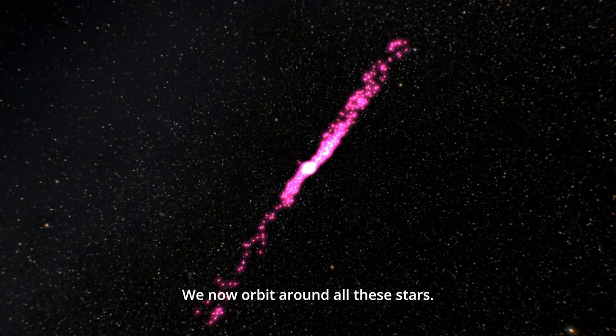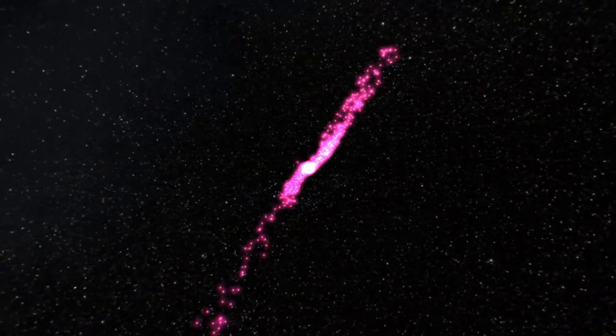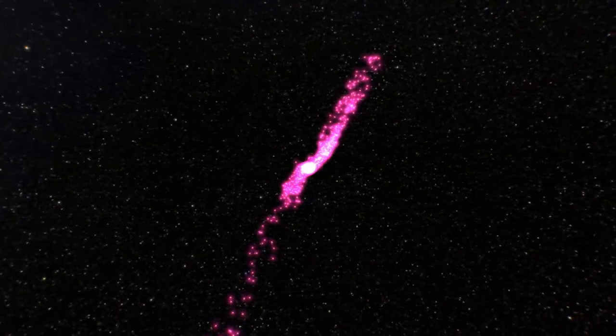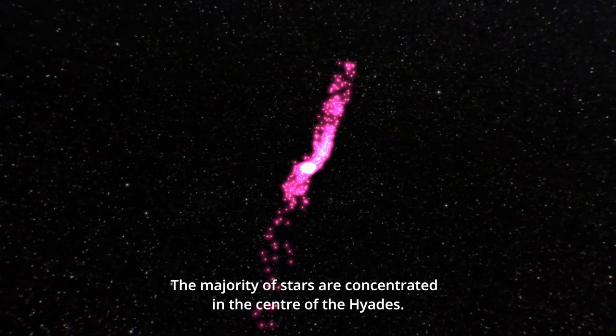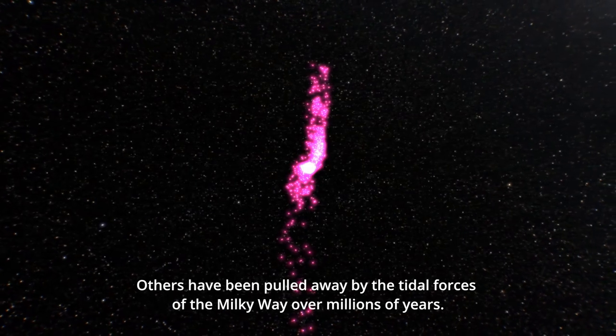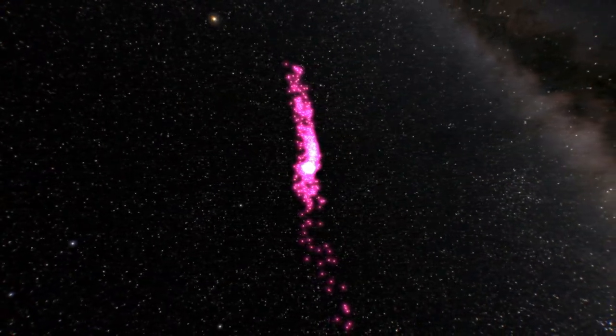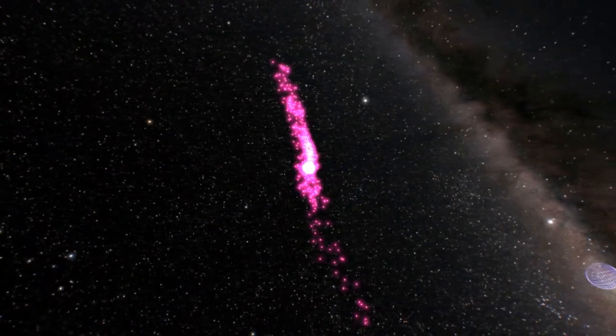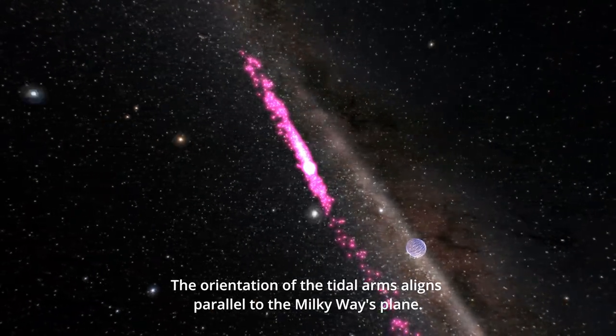We now orbit around all these stars. The majority of stars are concentrated in the centre of the Hyades. Others have been pulled away by the tidal forces of the Milky Way over millions of years. The orientation of the tidal arms aligns parallel to the Milky Way's plane.